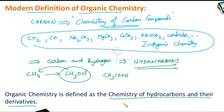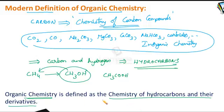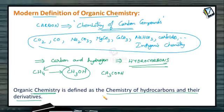We can now define organic chemistry as the chemistry of hydrocarbons and their derivatives — meaning the study of hydrocarbons, including their preparations, chemical reactions, physical properties, and structural behavior, along with their derivatives. So the exact definition of organic chemistry is: it is the branch of chemistry which deals with the study of hydrocarbons and their derivatives.